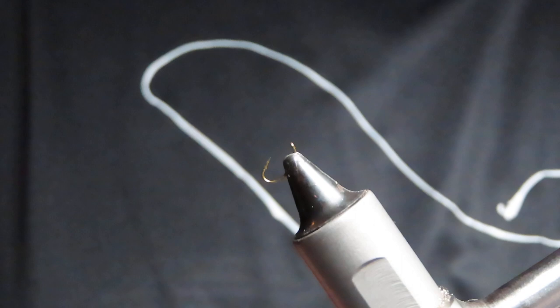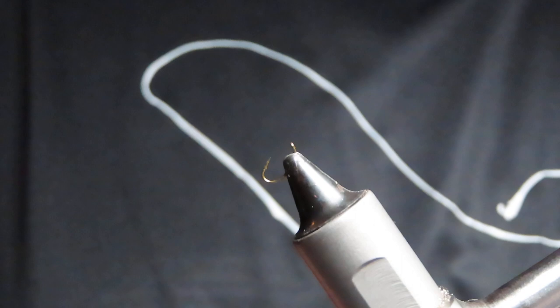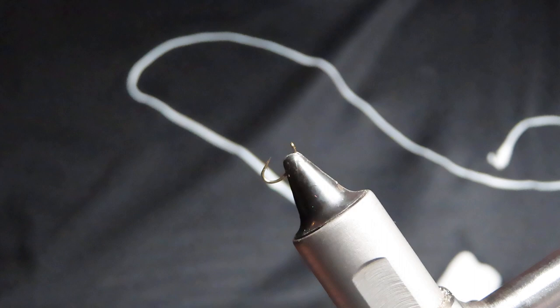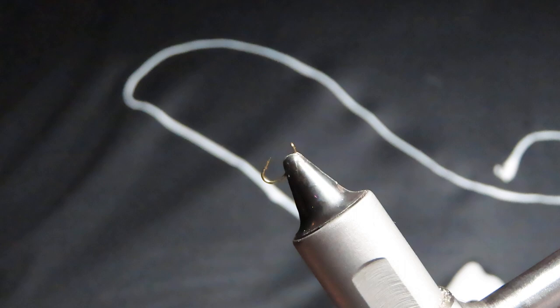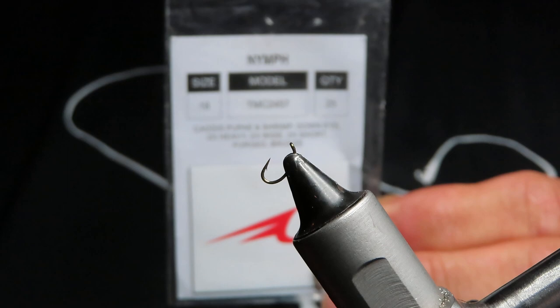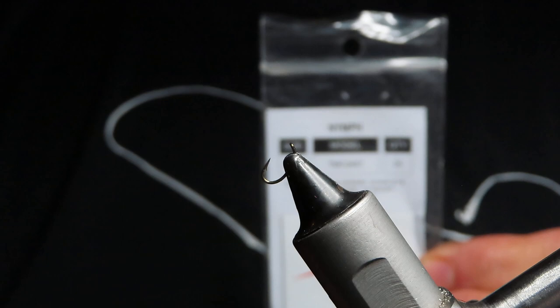Hit the like button. So tonight I'm starting off with a size 18. I'm going to tie a zebra midge, a black zebra midge, and I'm going to use a size 18 hook, a Timco 2457. Like I said, this is my first attempt, so might have to go back and edit some stuff.